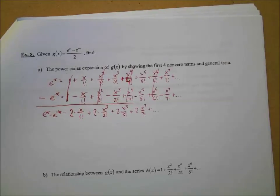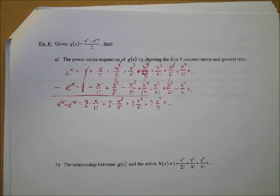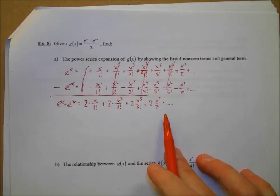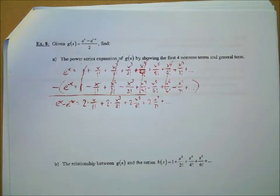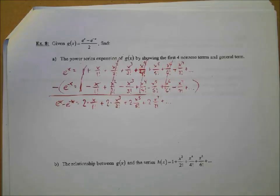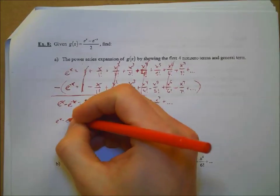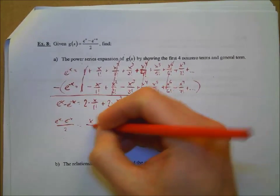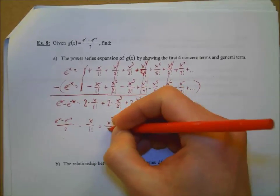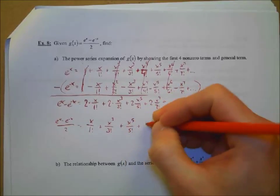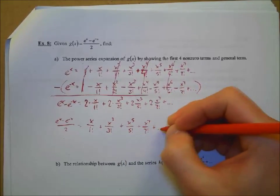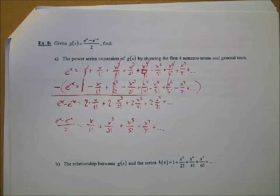All right, so that should be something like that — there are our first four non-zero terms. And again, we're subtracting that quantity, that's why all those minuses become opposites. We still have to divide both sides by two. And thank goodness we can get rid of all those twos — so e to the x minus e to the negative x all over two, and all these twos just cancel, dividing both sides of the equation by two.